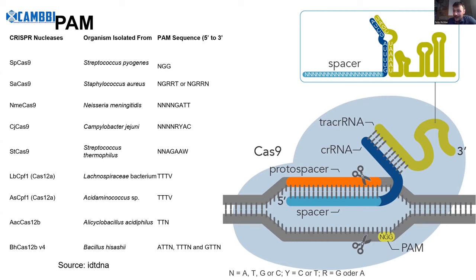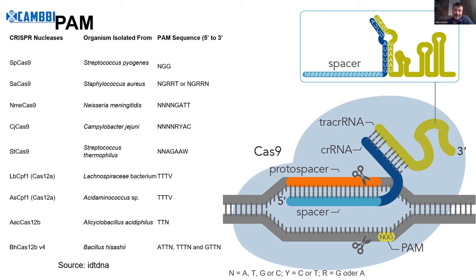We need this PAM sequence where the Cas protein binds first, then it unwinds the double-stranded DNA into single strands and checks whether the spacer fits — whether the short RNA sequence I gave the Cas protein matches the position. Only if it fits does it cut both strands. Then DNA repair begins: either the cell loses some bases and probably destroys the gene, or it uses some template to repair it.